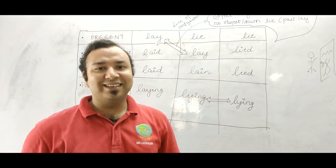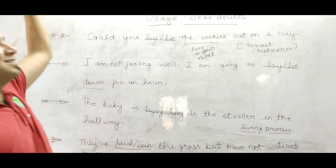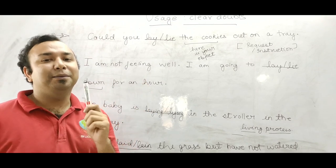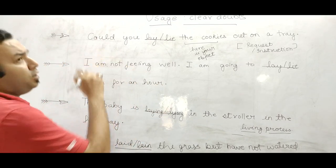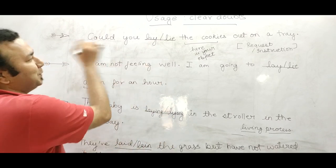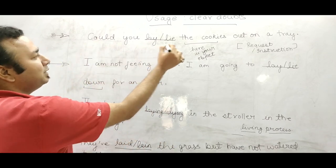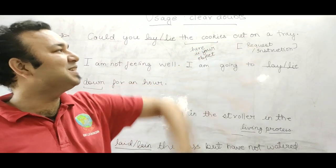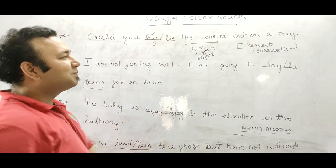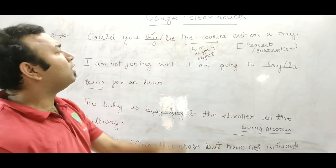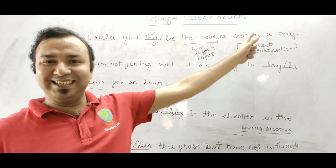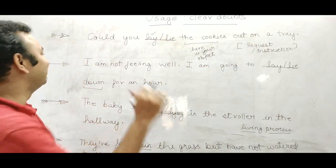Let's do some examples. Use examples to clear all your doubts. You must remember this. In English, words are used in different ways. So, first example: Could you lay or lie the cookies out on the tray? So what will come here? Lay. Why? Because object comes - non-living cookies. So lay. Request, instruction is hidden in this sentence. Sense it. Always make sense when you speak English.